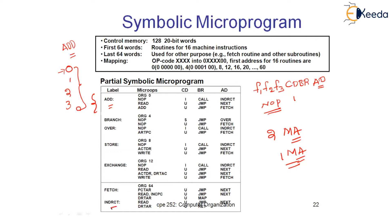In the indirect routine, one read operation will be performed — that is one memory access. After that one memory access has been performed, we return back to the addition routine from where the indirect routine was called. So initially we check whether the operand is at a direct or indirect address; if indirect, we branch to the indirect routine, and after one memory access, return back.